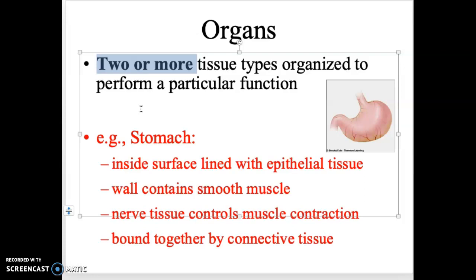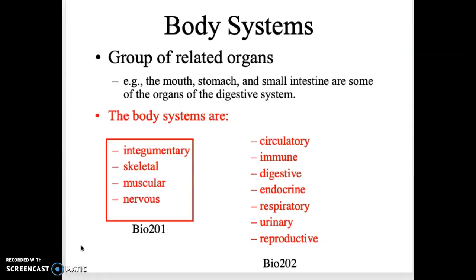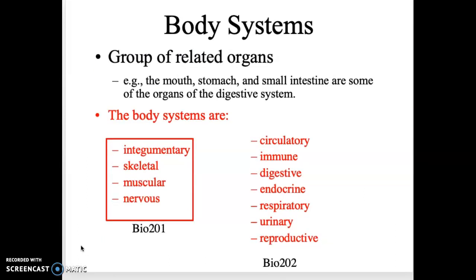Just a hint for you in the lectures: anything written in red you don't need to know for the exam — it's just there as an FYI. Body systems are groups of organs working together. For example, the digestive system includes the mouth, stomach, intestines, and other organs. On the left-hand side in the box you can see a list of body systems we'll go through in BIO 201.